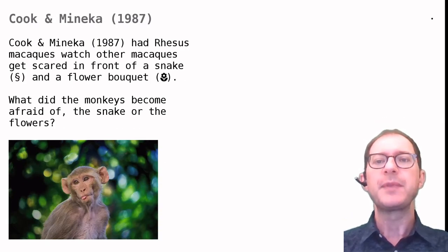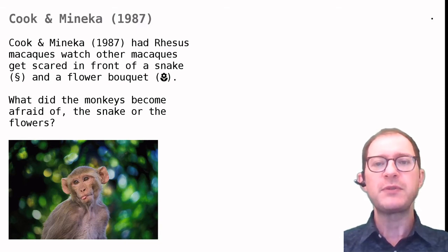Cook and Mineka had Rhesus macaques watch other macaques get scared in front of a snake and a flower bouquet. This is a now-classical experiment in the social learning of fear. Social learning refers to the fact that often animals learn from what they see other animals doing. In this case, monkeys were learning what to be afraid of.